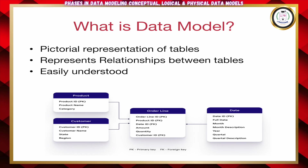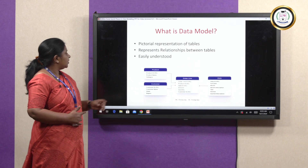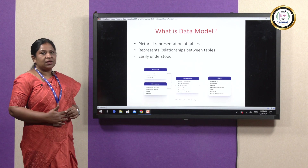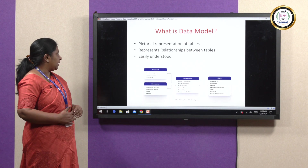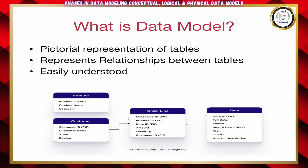As you can see in the picture, this is a data model wherein we have four tables: product, customer, order line, and date, in which we can see the relationship among these data entities as well. The tables are otherwise called as entities. We can easily understand it as it is a pictorial representation.